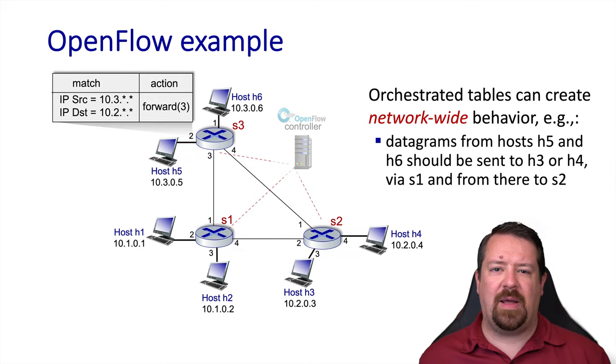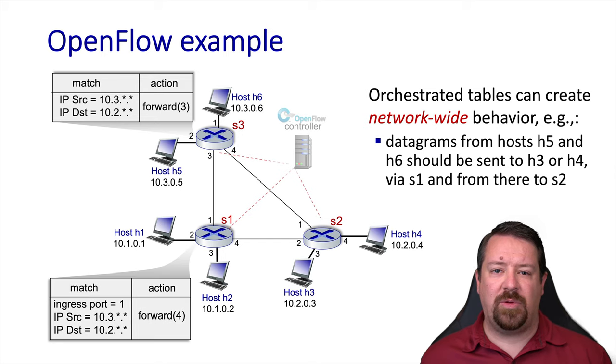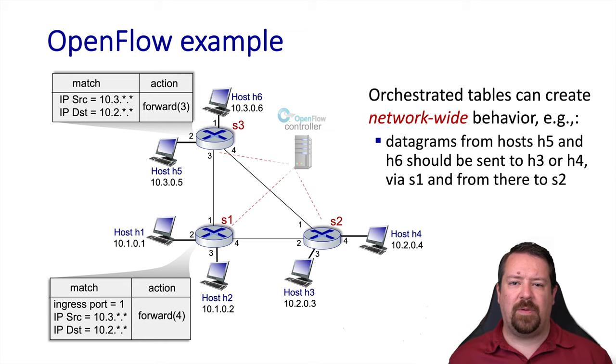In this case, we're doing that by matching both the source and destination prefixes and forwarding them out to port 3 on S3. At S1, we also have rules that add matching the ingress port with the source and destination prefixes and forward the packets out port 4. At S2, the hosts are on two different ports, and so we have the two different corresponding actions.